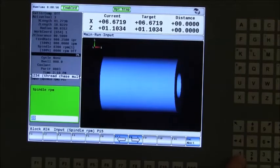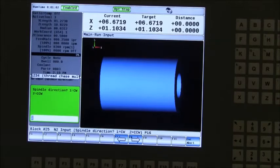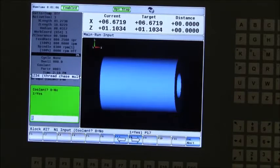Spindle RPM - I'm just going to put a slow RPM in there so we can watch it run. Spindle direction: one for clockwise, two for counterclockwise. Coolant: zero for no, one for yes.